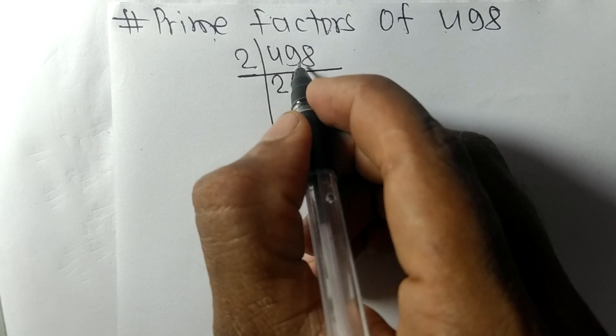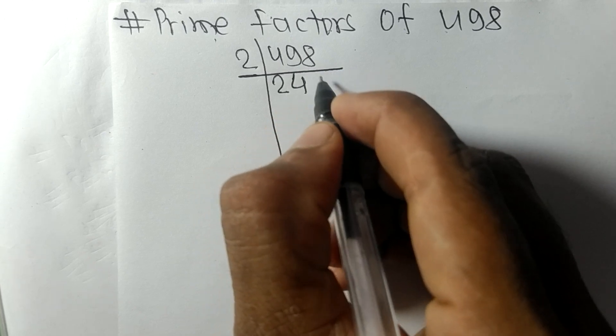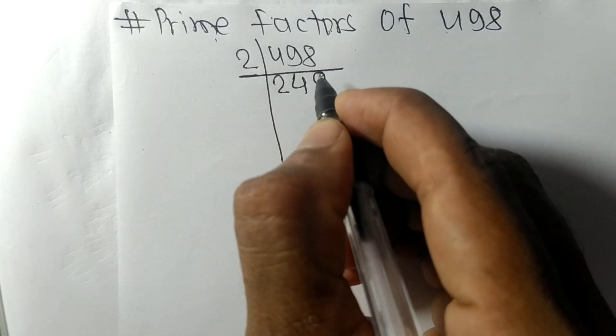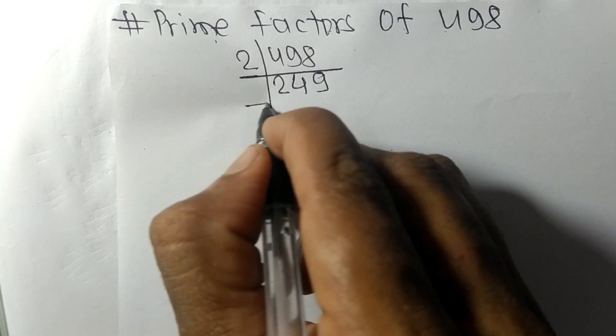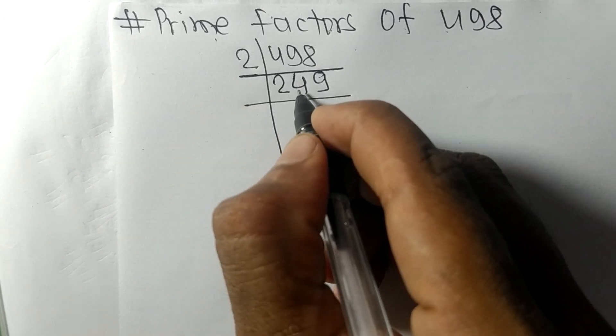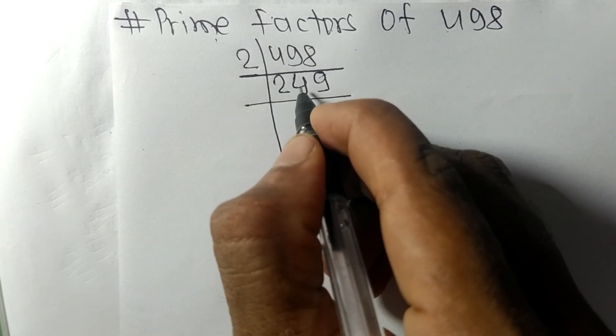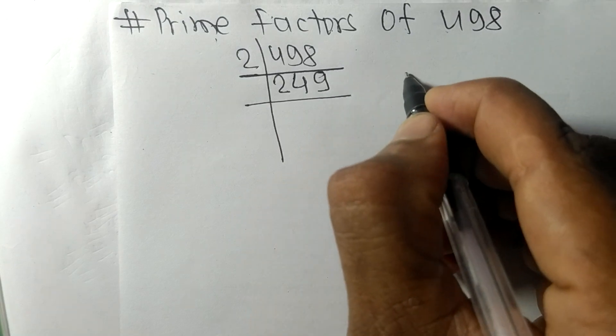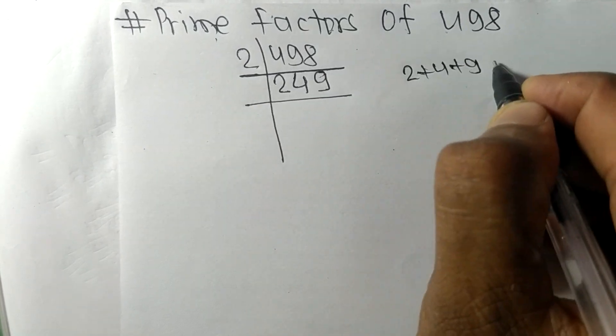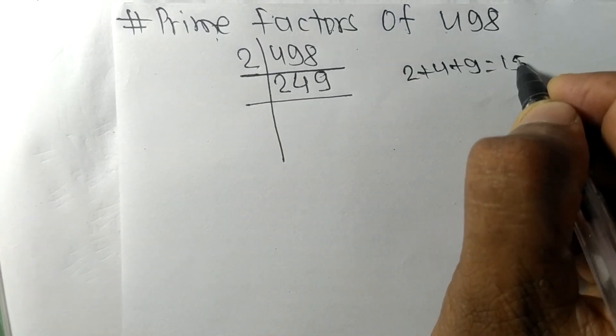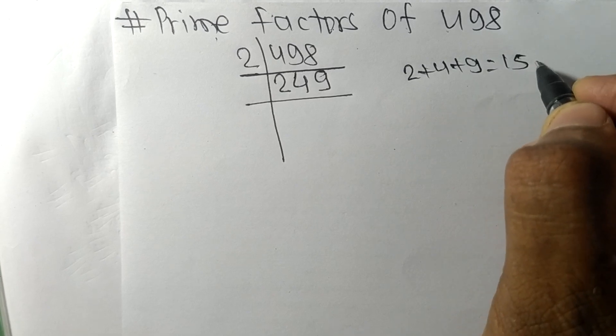8, remainder 1. 1, 8, 18. 2 times 9 means 18. Now we got here 249. When we add all these numbers, that is 2 plus 4 plus 9, then we get 15, and 15 is